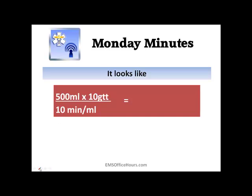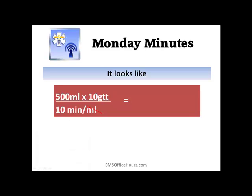An easy thing you can do is cross out like values. So 500 times 10 divided by 10 — what do you end up with? Pretty simple: 500 drops per minute. You can even break it down further: cancel the 10s, and all you're left with is 500. Pretty easy to do. So don't let this be more complicated than it has to be.